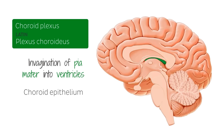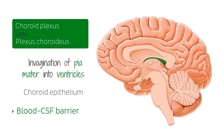This simple cuboidal epithelial covering is continuous with the ependyma — the glial cell membranous lining of the ventricles — and forms a blood-cerebrospinal fluid barrier, which helps to control the brain's internal environment.